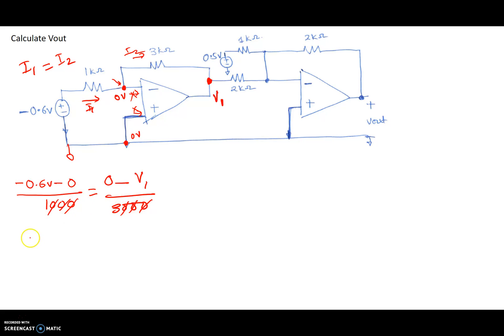So basically, if I arrange this, I get minus 0.6 equals minus V1 over 3. Therefore, V1 equals 1.8 volts. So that's 1.8 volts, as I had stated earlier.